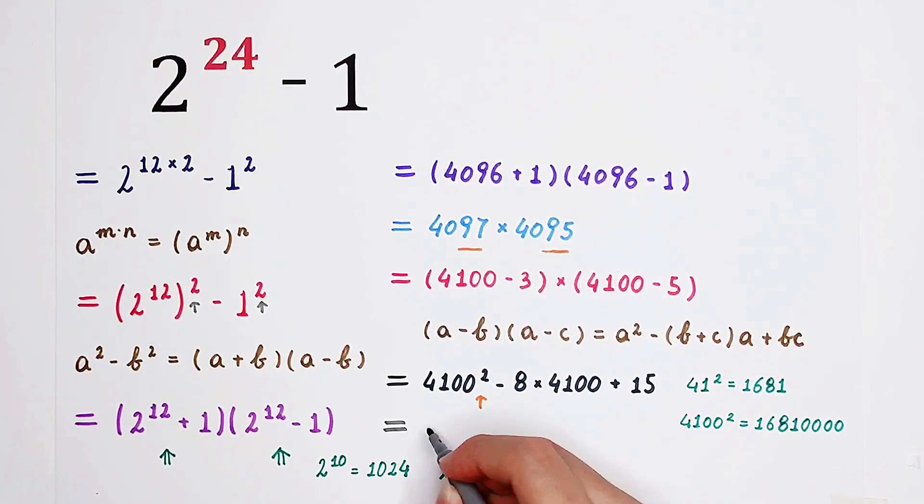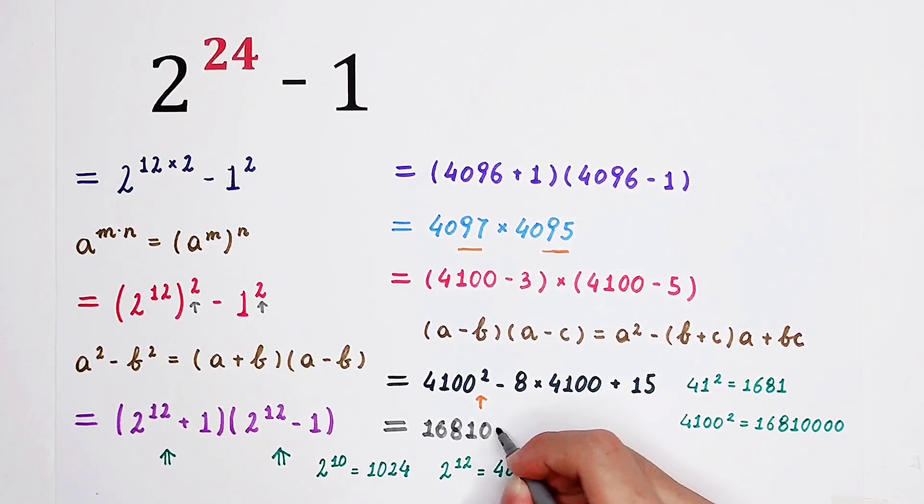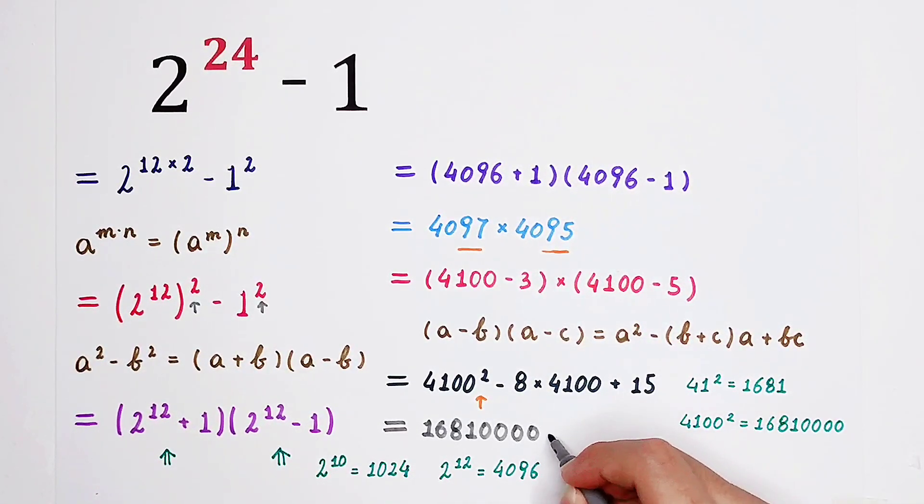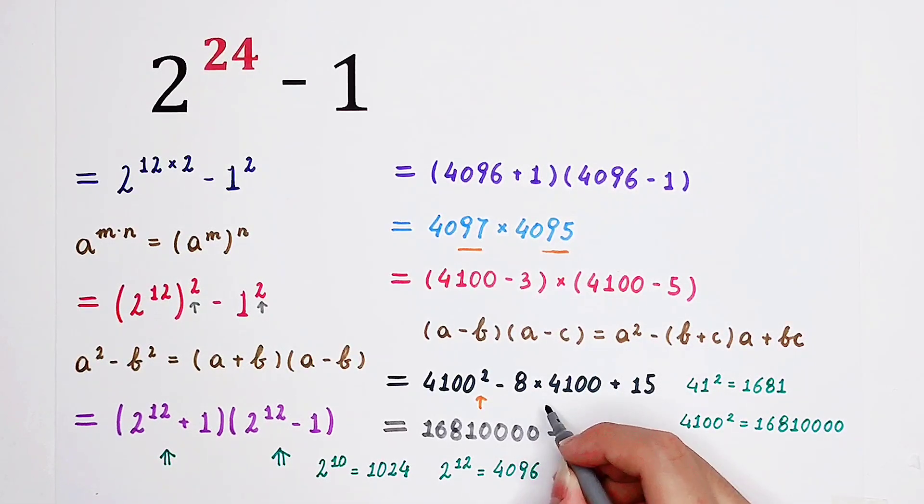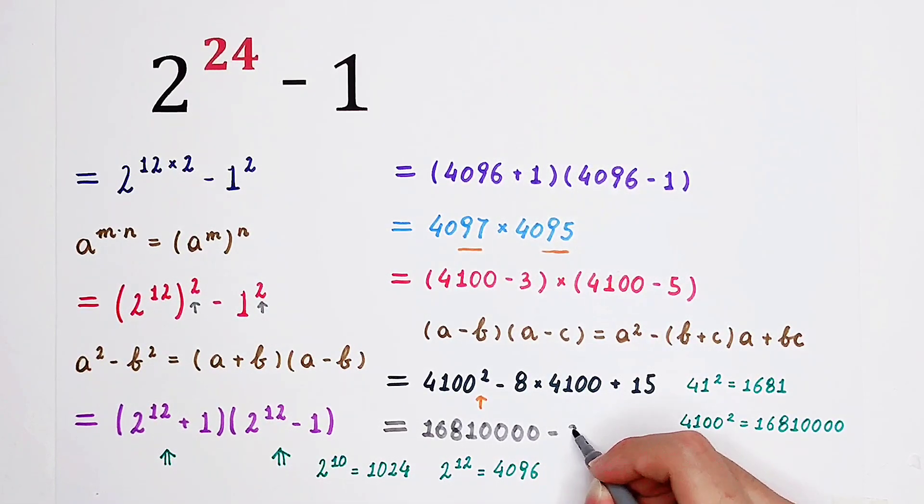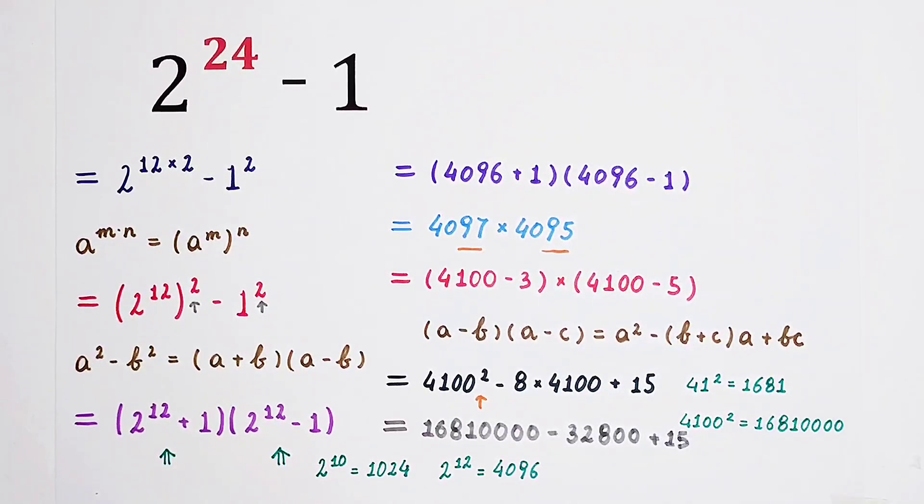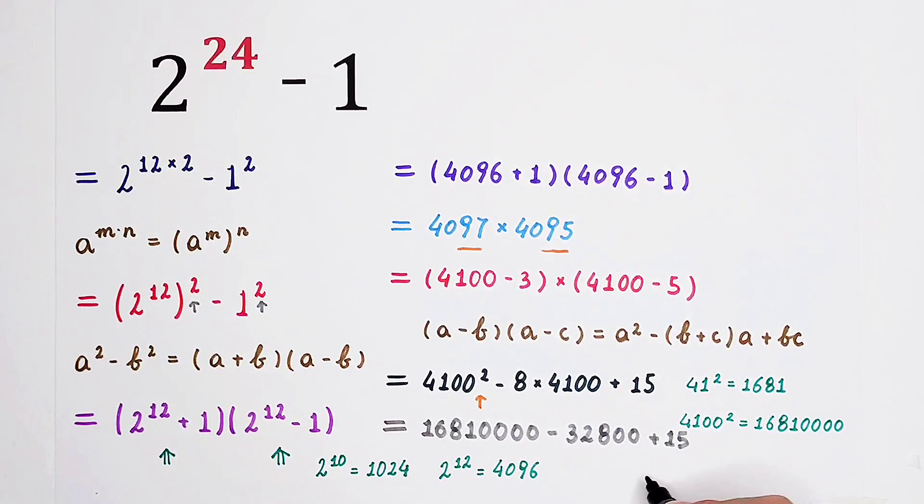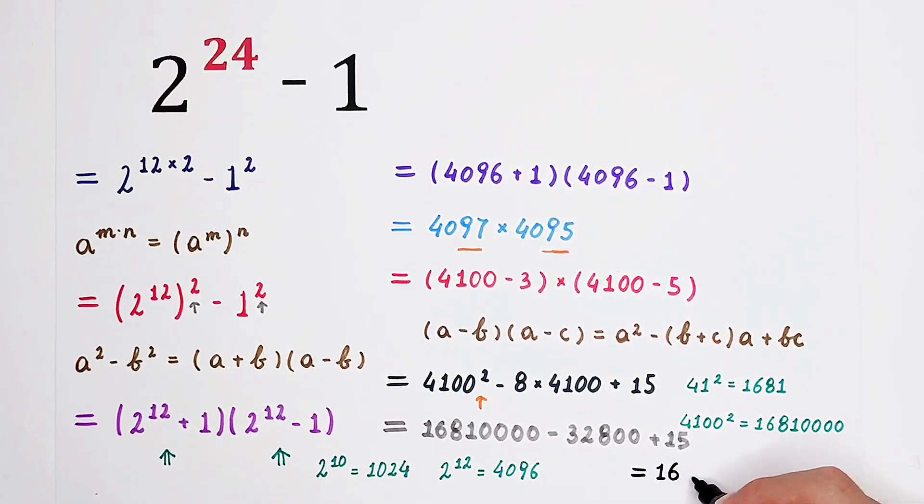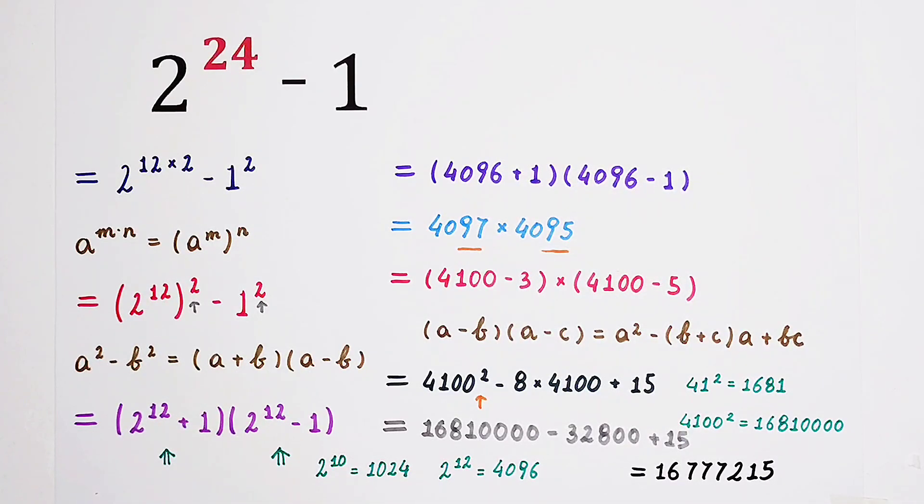Since 100 squared is 10,000. In the end, it is 16810000 minus 8 times 4100. That is 32,800. And then plus 15. So the answer is 16777215. That's the result.